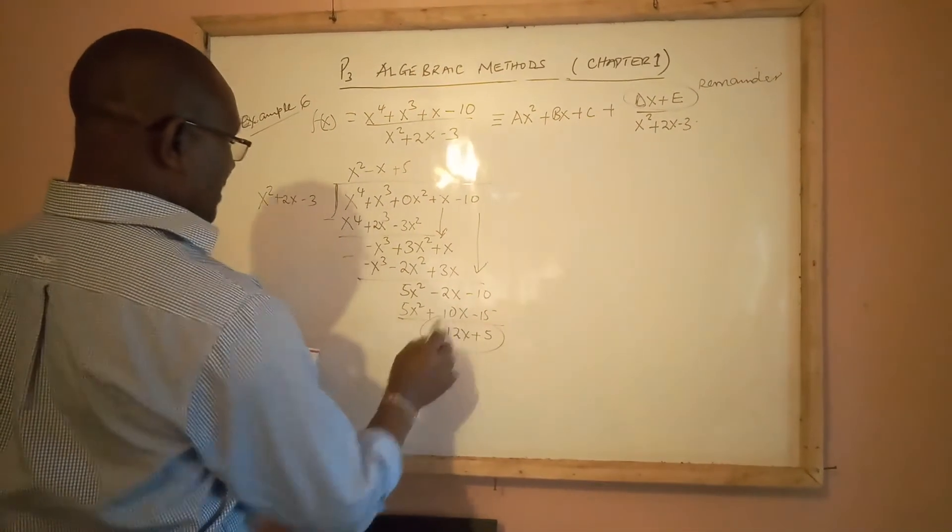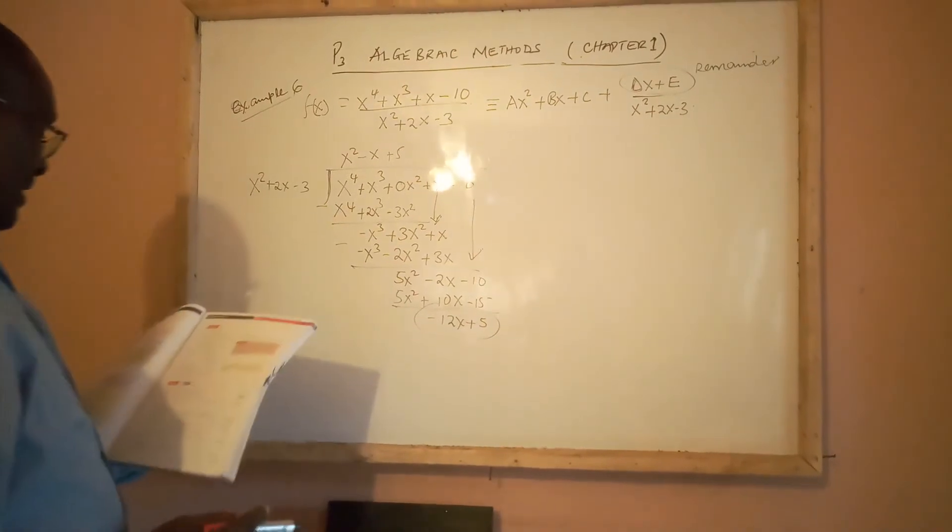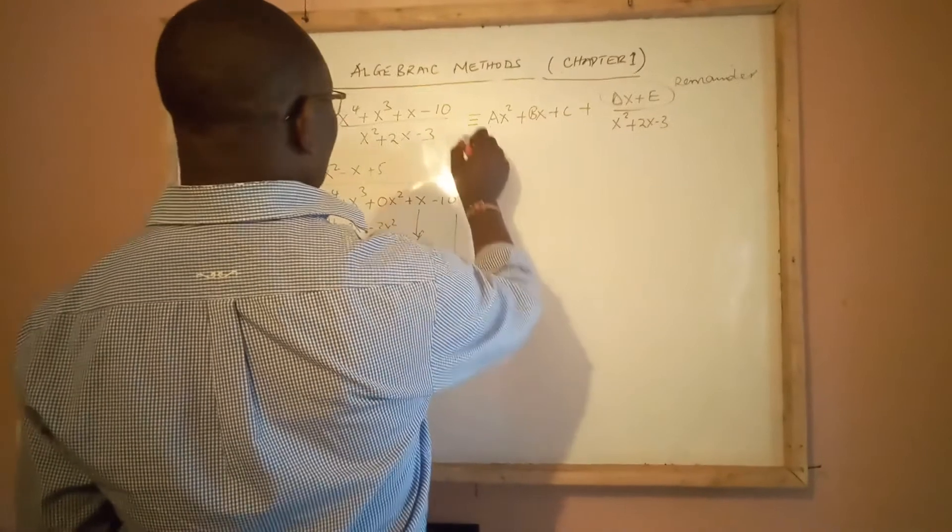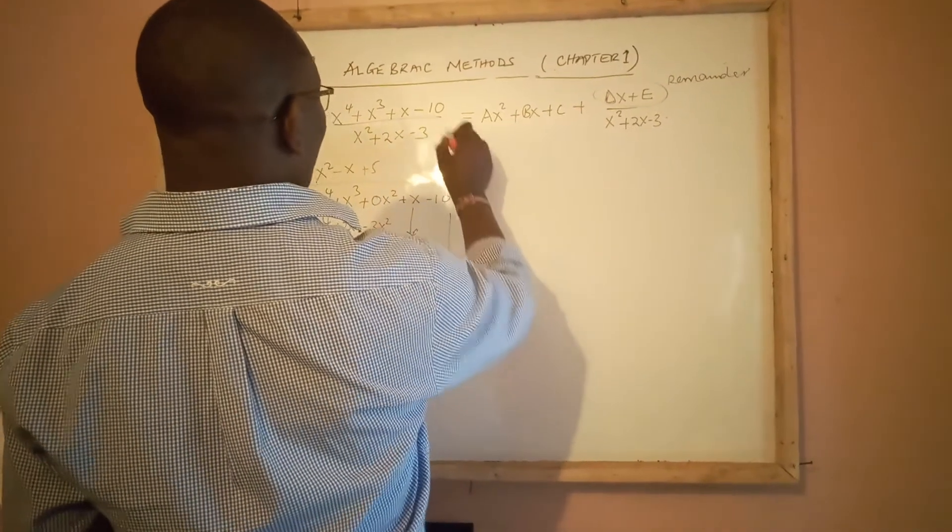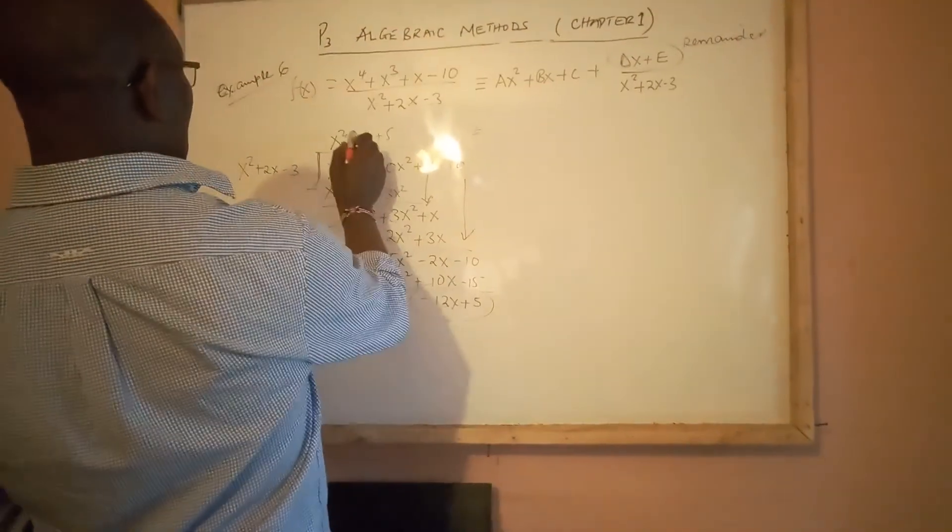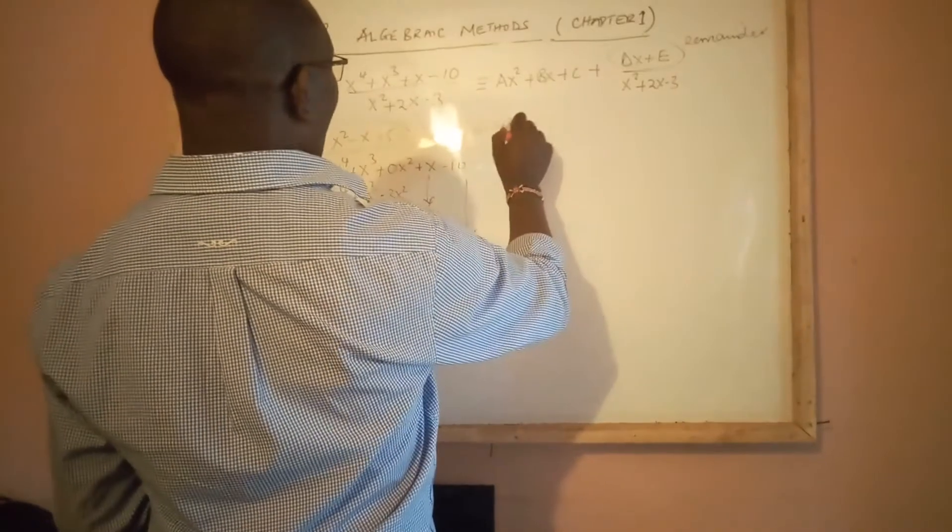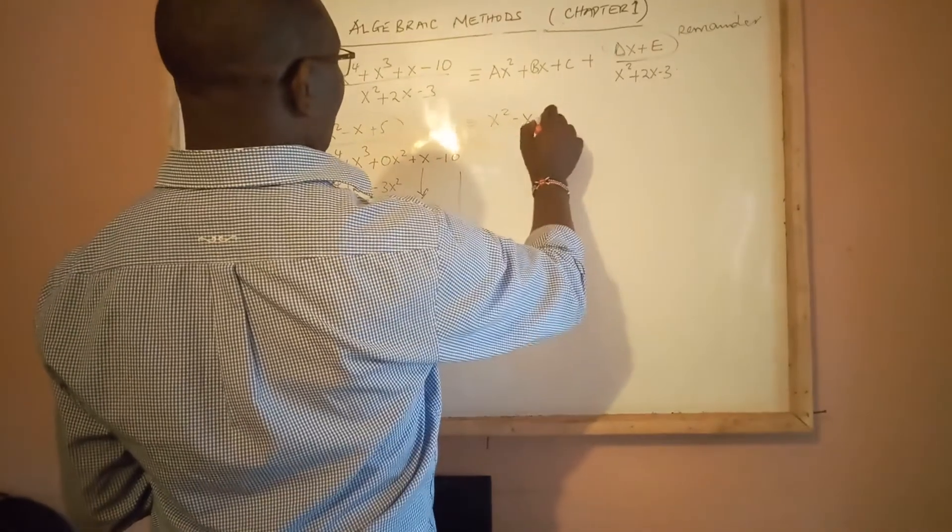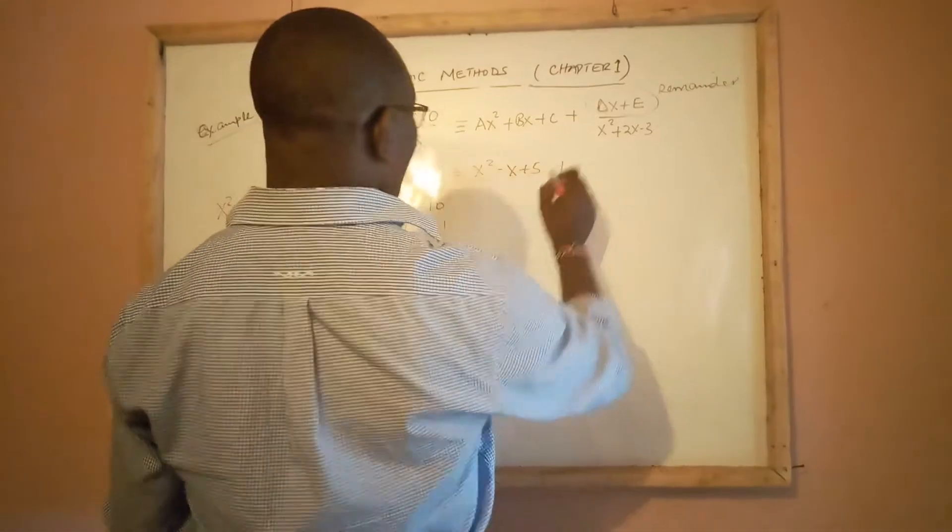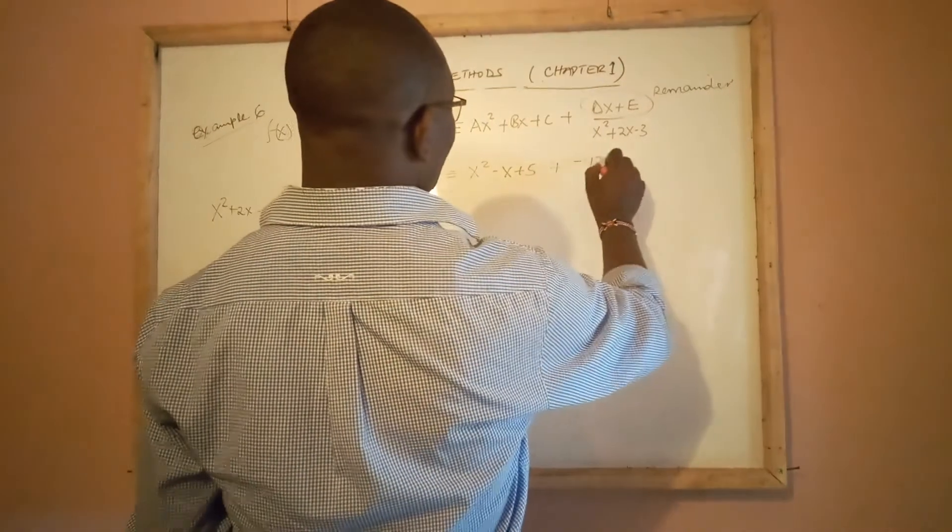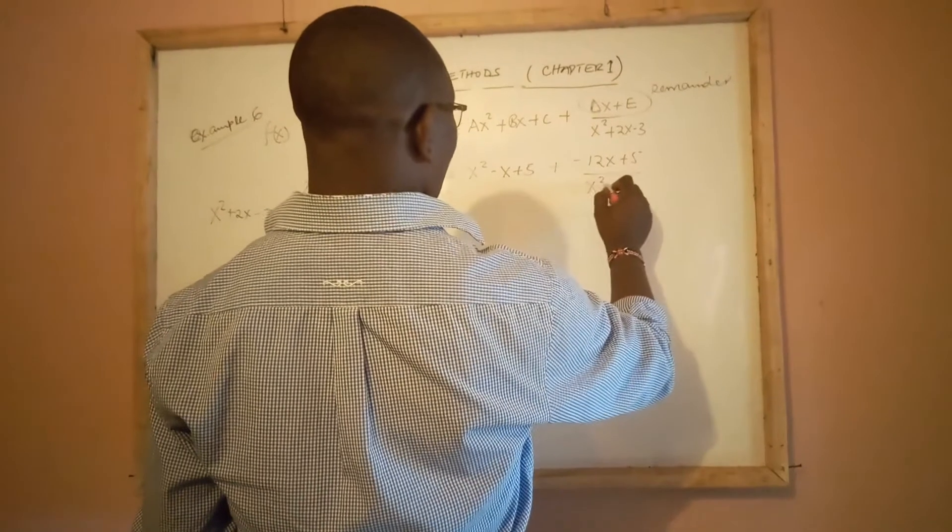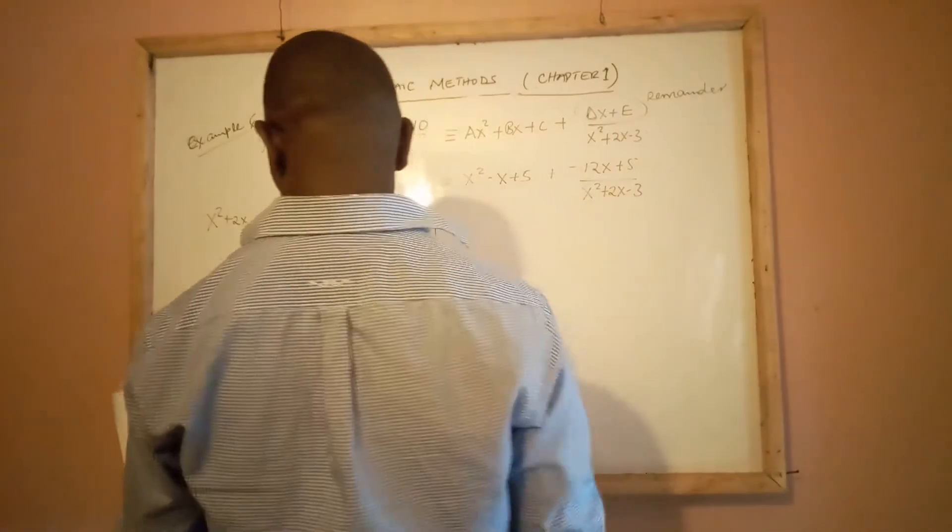So, what we are having here can be written as: we just assume that we are having this part exactly equals to x^2 - x + 5, plus now the remainder, -12x + 5, all over x^2 + 2x - 3.